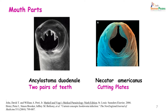The worms can further be differentiated based on their mouth parts. Ankylostoma duodenale has 2 pairs of teeth and Necator americanus shows cutting plates. It is with the help of these that they attach to the mucosa of the small intestine and suck blood.